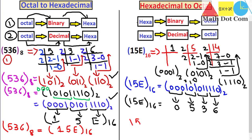So 15E hexadecimal equals 536 octal — the leading zero is optional. Both methods are inverses of each other. Remember: in hexadecimal-to-octal we first make 4-bit combinations then 3-bit groups, and in octal-to-hexadecimal we first make 3-bit combinations then 4-bit groups. As an exercise, try converting octal to hexadecimal via the decimal route, and let me know in the comments if you'd like another lecture on that. That's all for today. Thank you.